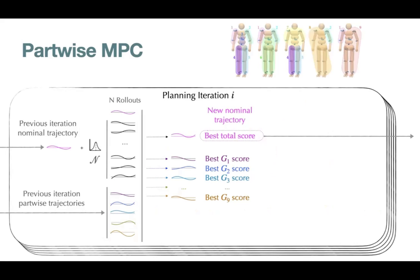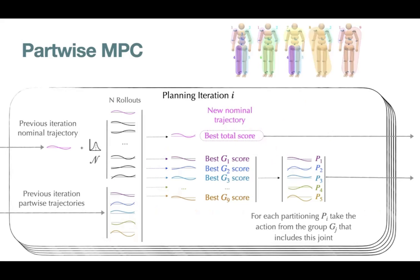For each partitioning P, we generate a new action spline, where each joint's action is taken from the best rollout for the corresponding group. Note that this change to the planner comes at no additional cost. We don't add to the number of rollouts, but only add an evaluation step to check if partwise results do better.